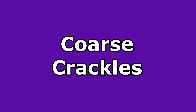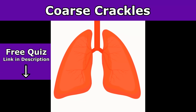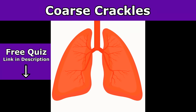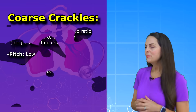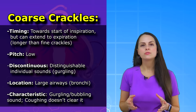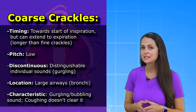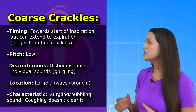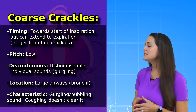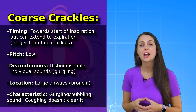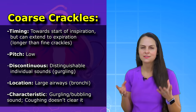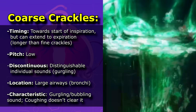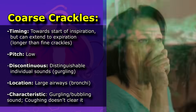Next up is coarse crackles. How do you know that you're hearing coarse crackles? You want to pay attention to their timing — coarse crackles tend to occur around the beginning of inspiration, but they can extend into expiration, and they tend to be longer than fine crackles. Their pitch is low and they are discontinuous. They tend to be located in the large airways, such as the bronchi, and they have specific defining characteristics: coarse crackles sound like a gurgling or bubbling sound that is not cleared with coughing.